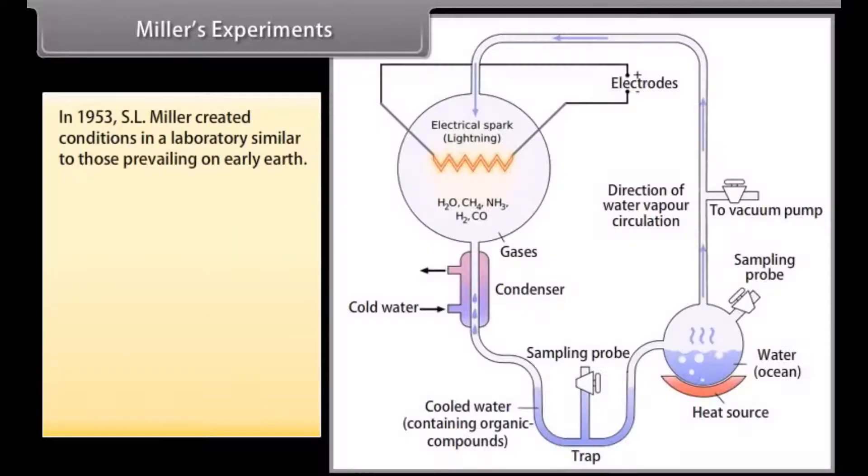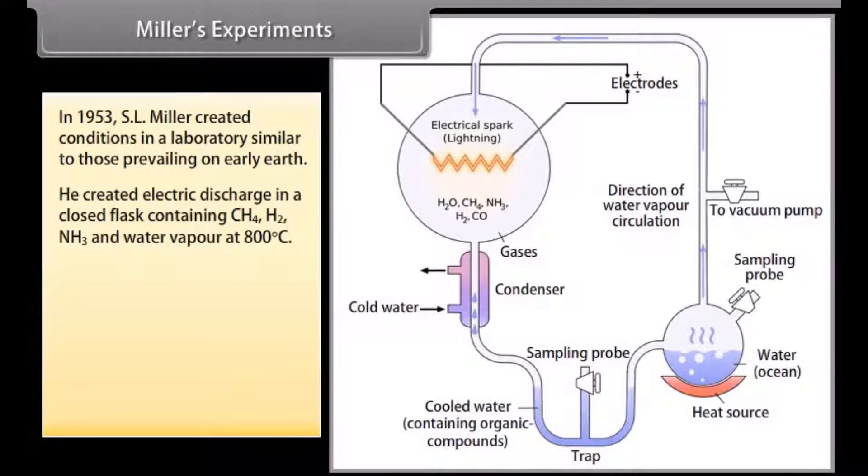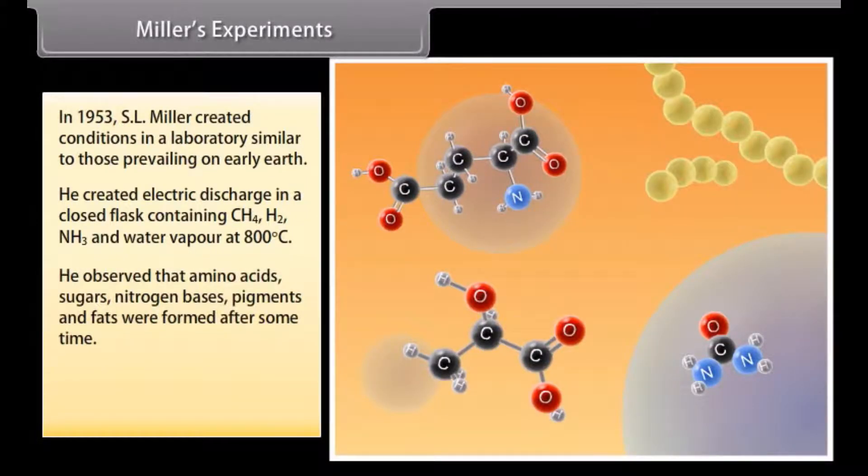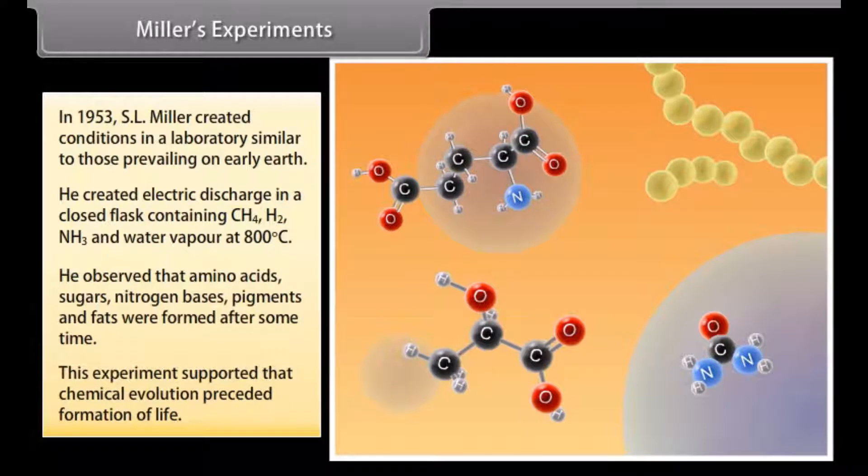Miller's experiments. In 1953, S.L. Miller created conditions in a laboratory similar to those prevailing on early earth. He created electric discharge in a closed flask containing CH4, H2, NH3 and water vapor at 800 degrees Celsius. He observed that amino acids, sugars, nitrogen bases, pigments and fats were formed after some time. This experiment supported that chemical evolution preceded formation of life.